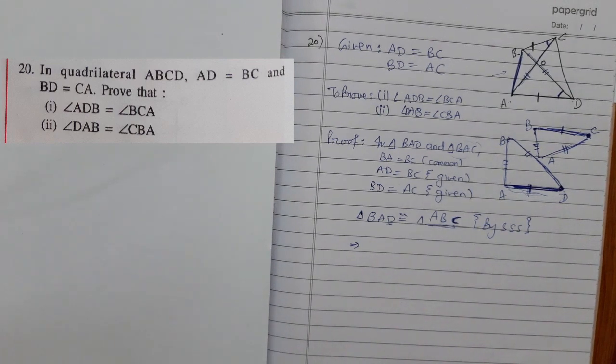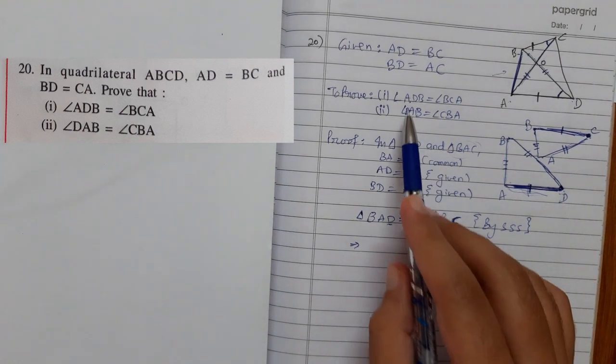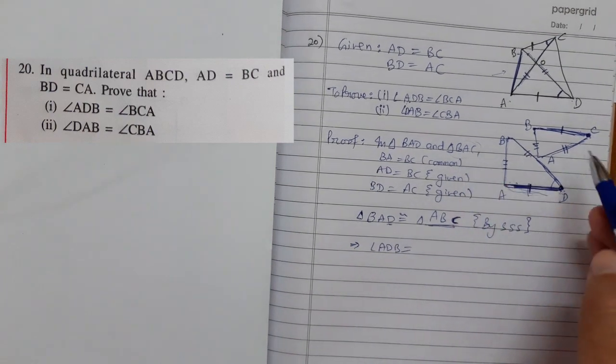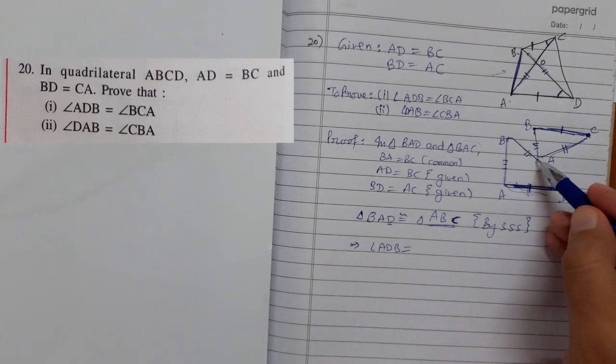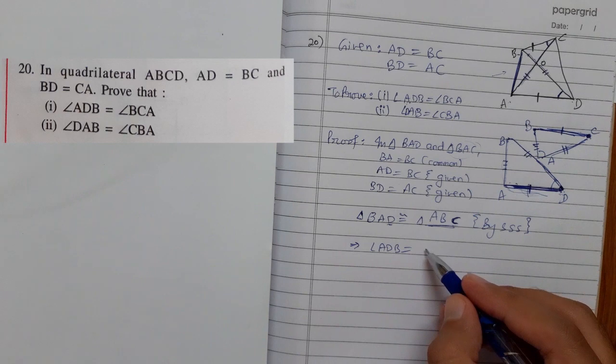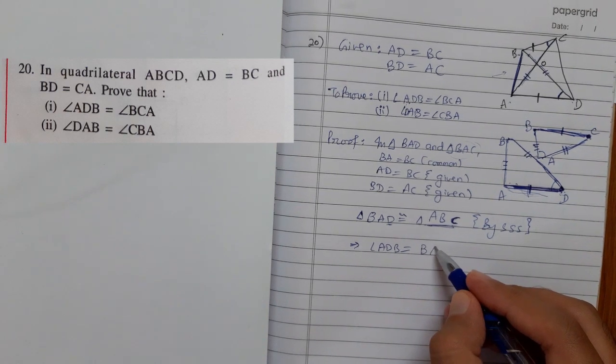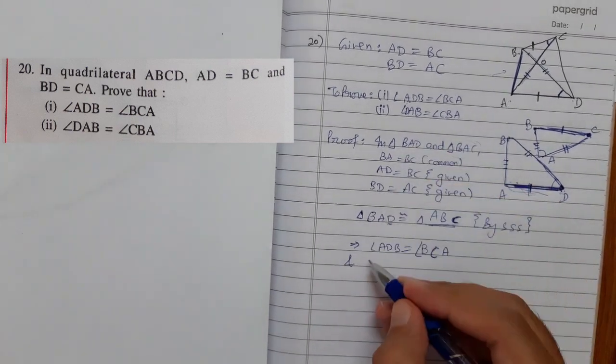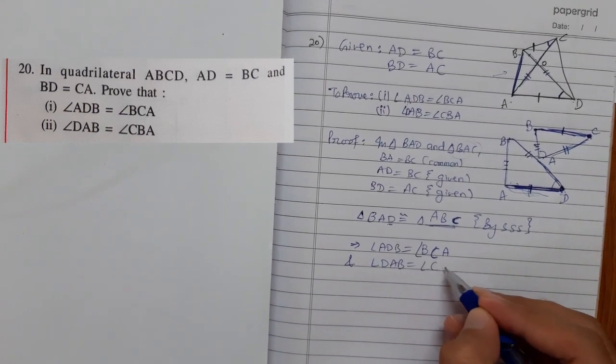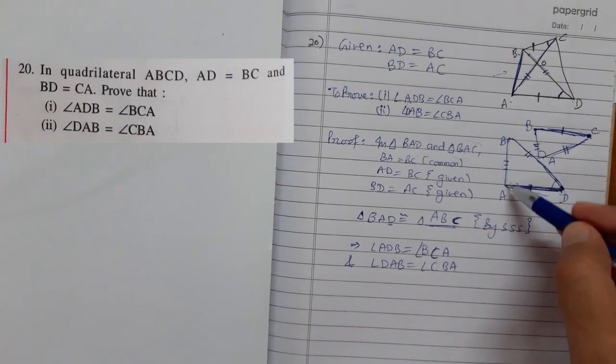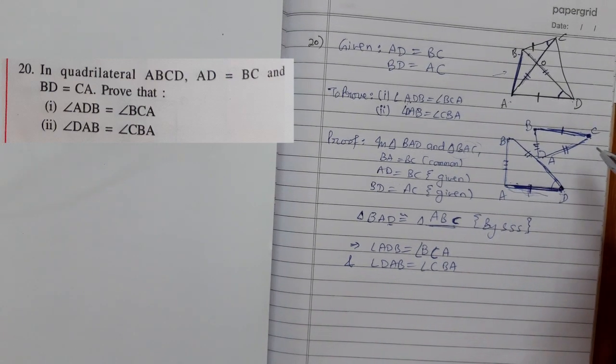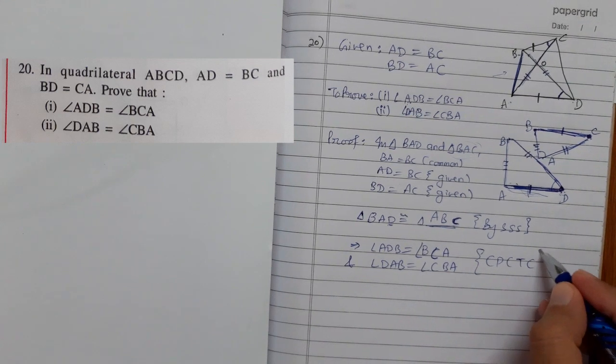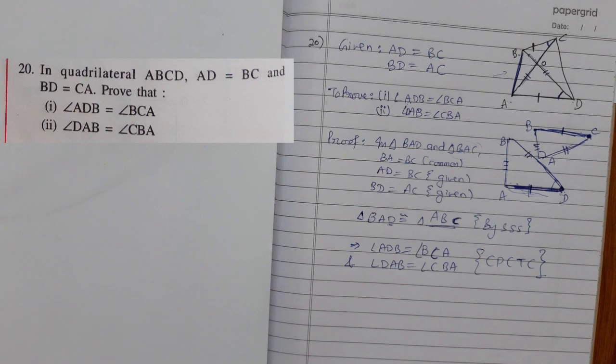Since two triangles are congruent, the remaining parts are also congruent with the help of CPCTC as we discussed. So angle ADB equals angle BCA. And angle DAB equals angle CBA by CPCTC.